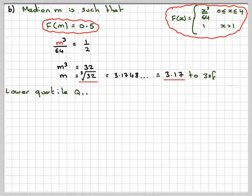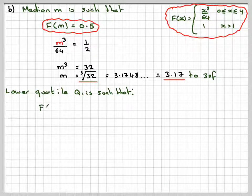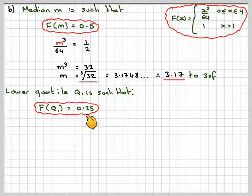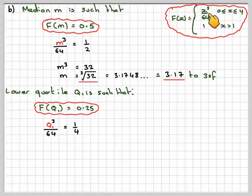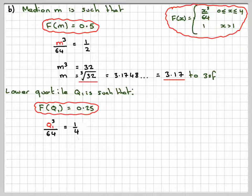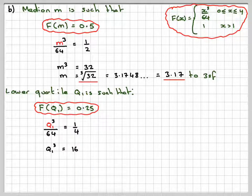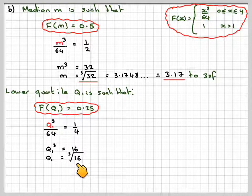The lower quartile Q1 is such that F(Q1) = 0.25. Putting Q1 in: Q1³/64 = 1/4. Taking 64 over, we get Q1³ = 16 (since 64 divided by 4 is 16). Therefore Q1 = ∛16.